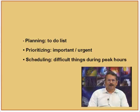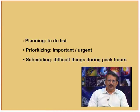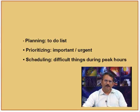Doing things right involves the following: first, planning, which involves a to-do list; then prioritizing, which of the things are important and urgent; and then scheduling difficult things during peak hours. This art of doing things right — planning, prioritizing, and scheduling — can be nicely illustrated with the help of an analogy.